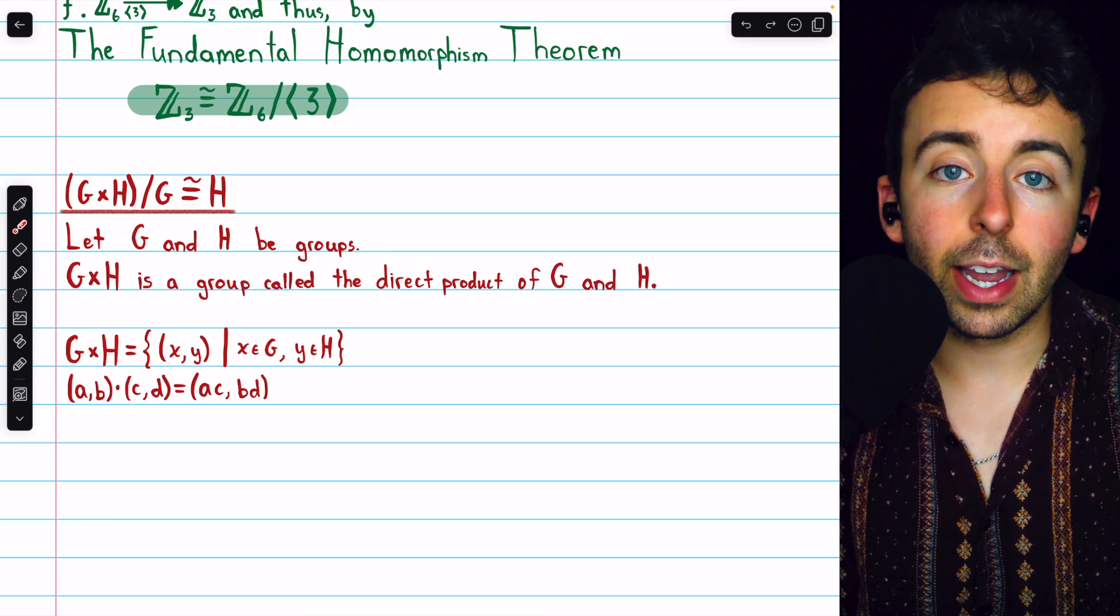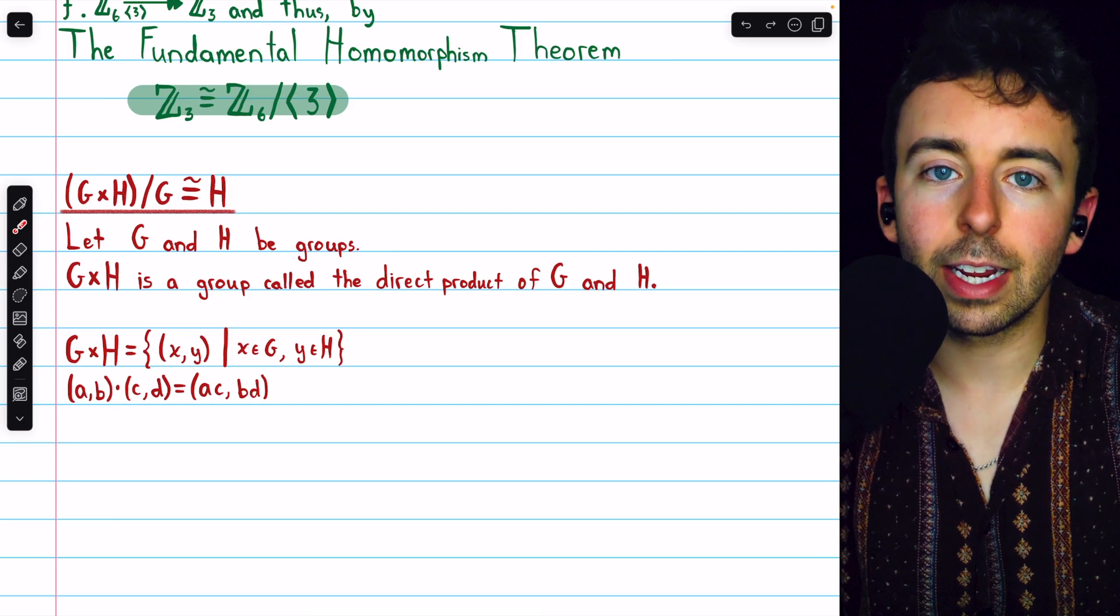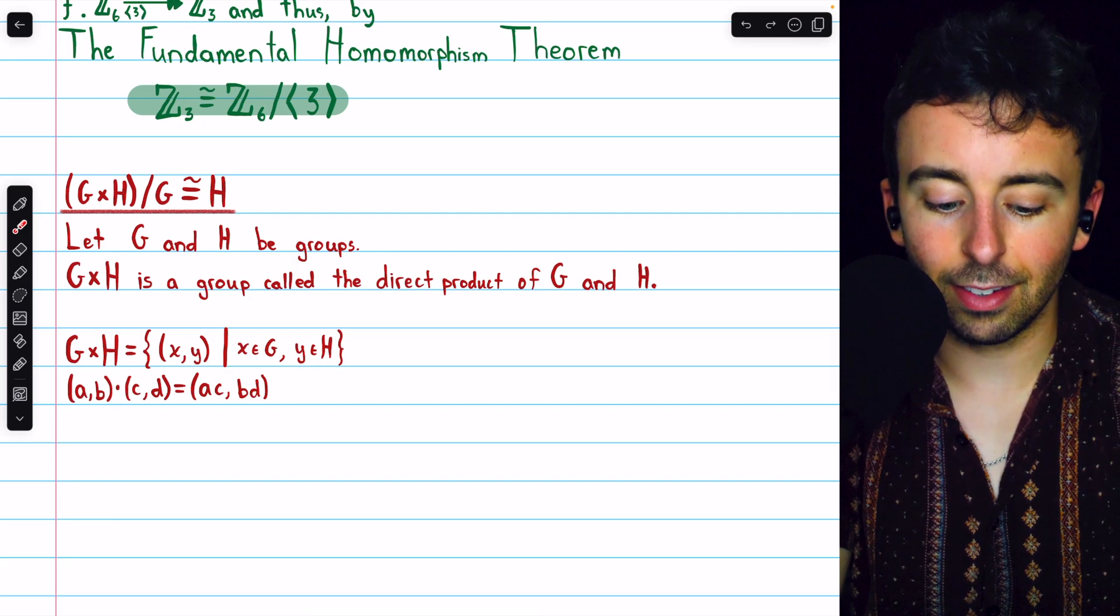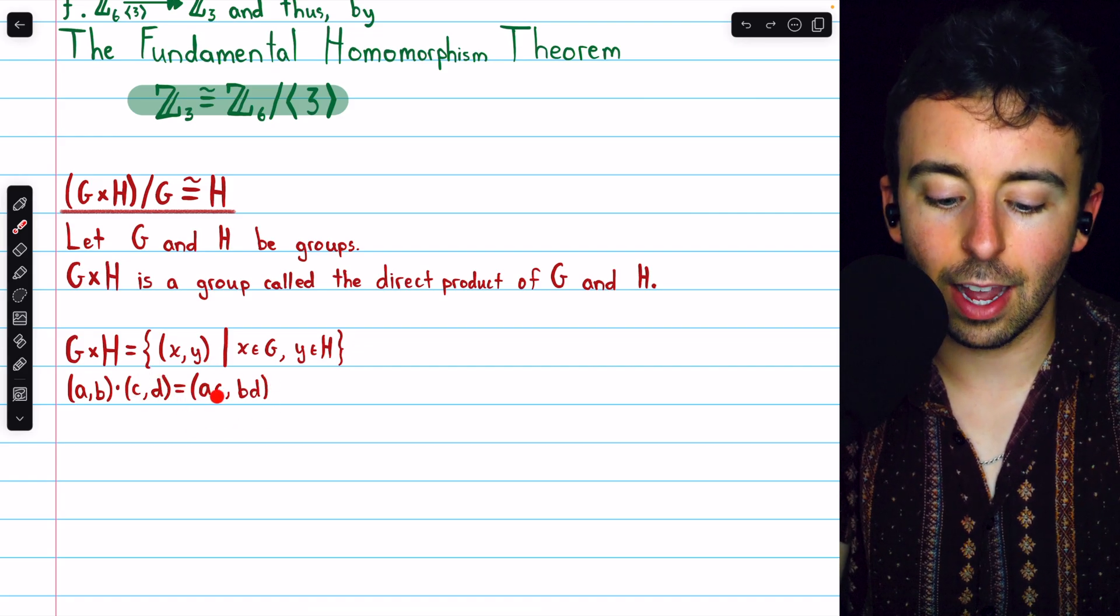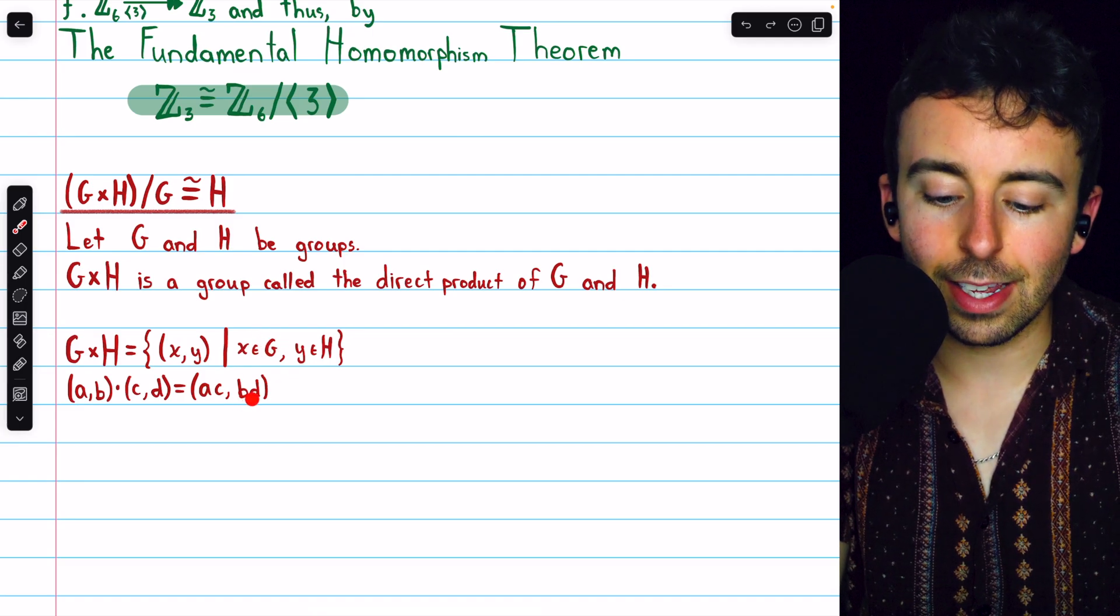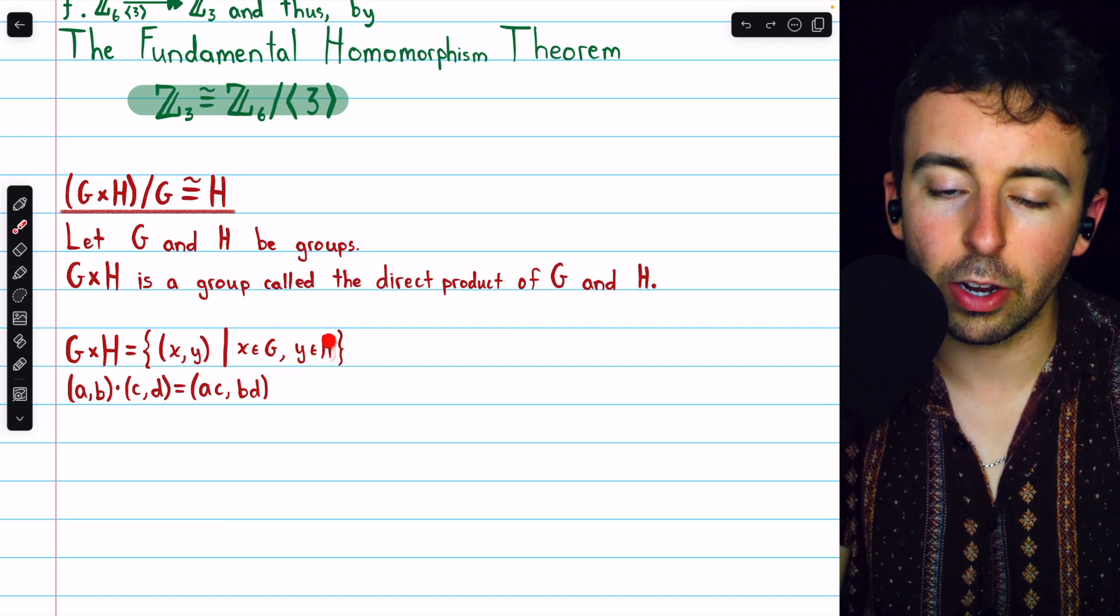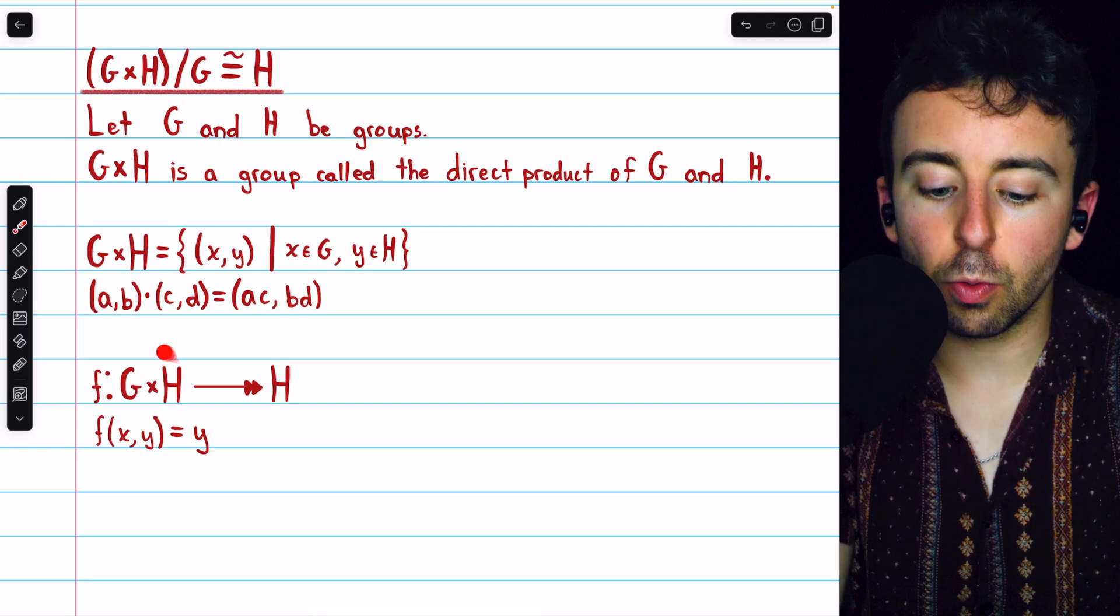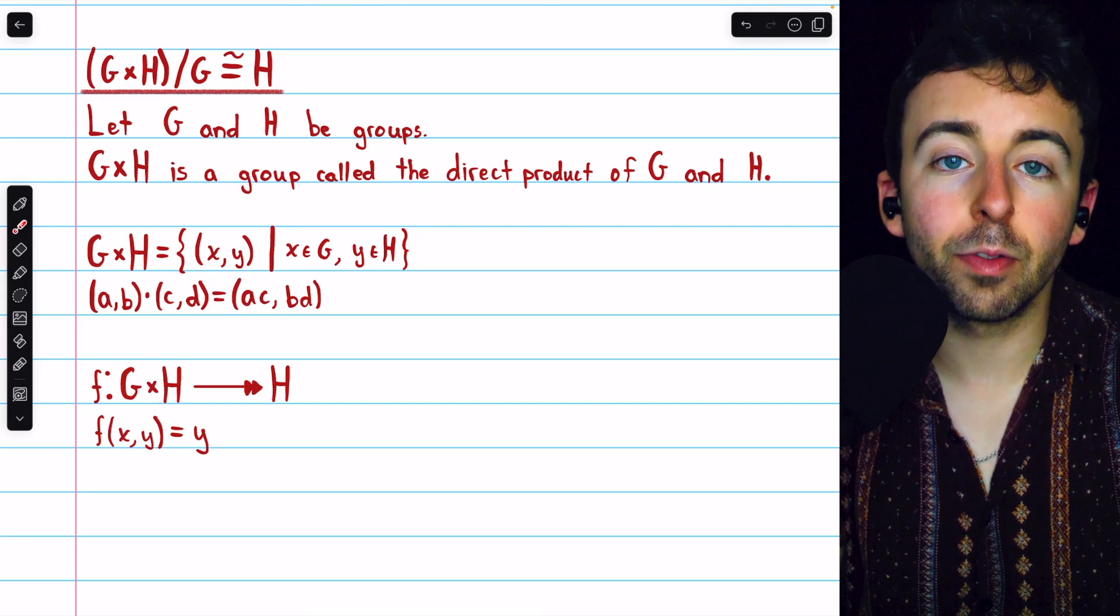where X ranges over the group G and Y ranges over the group H. The way we combine two ordered pairs from the direct product is by multiplying corresponding components with their appropriate group operations. That is, AB times the ordered pair CD is this ordered pair. A times C, those are being multiplied with the group operation in G, and BD is the second component, where those are being multiplied under the operation from H.